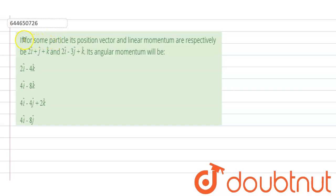Hello students, so the question is: if for some particle its position vector and linear momentum are respectively 2i cap plus j cap plus k cap and 2i cap minus 3j cap plus k cap, its angular momentum will be.